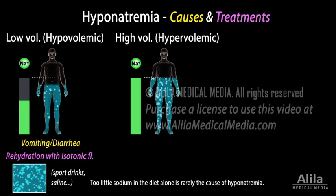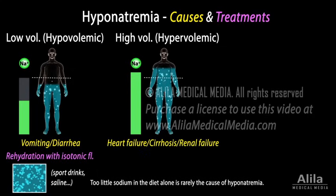In high volume, or hypervolemic hyponatremia, both sodium and water levels increase, with a relatively greater increase in body water. This often results from fluid retention in conditions such as heart failure, liver cirrhosis, or kidney failure, and is usually treated with diuresis.